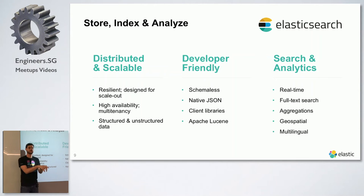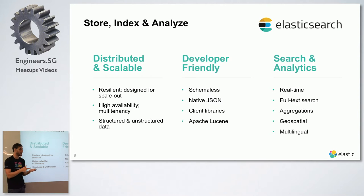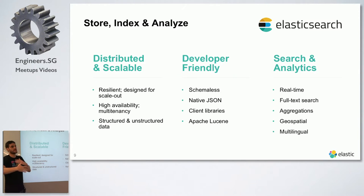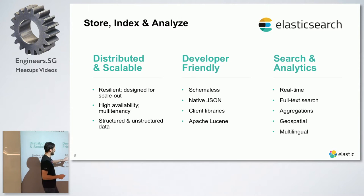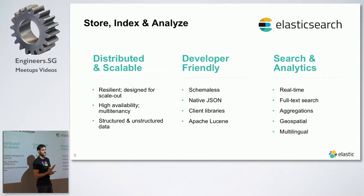For example, when you go to Wikipedia and search, that search is coming from Elasticsearch. When you use Tinder — if somebody here is using Tinder — Tinder uses Elasticsearch for those searches. When you swipe left or right, those searches are powered by Elasticsearch. What you get at the end of the day is very fast searches and very fast aggregations — grouping information, generating facets, executing arithmetic in real time.